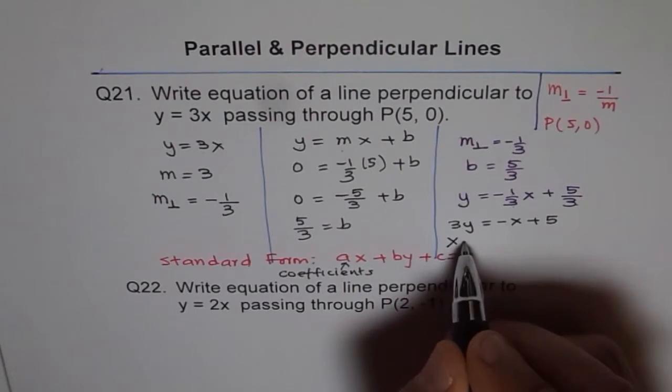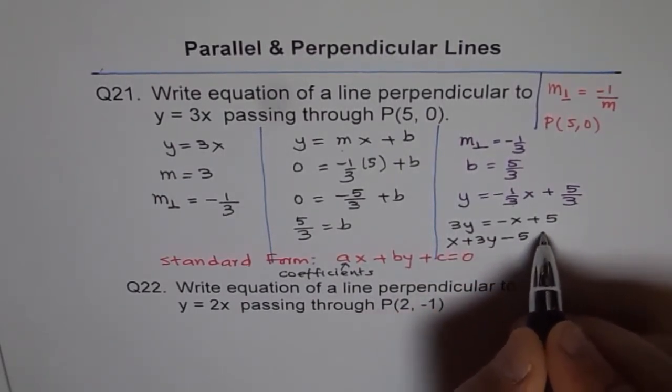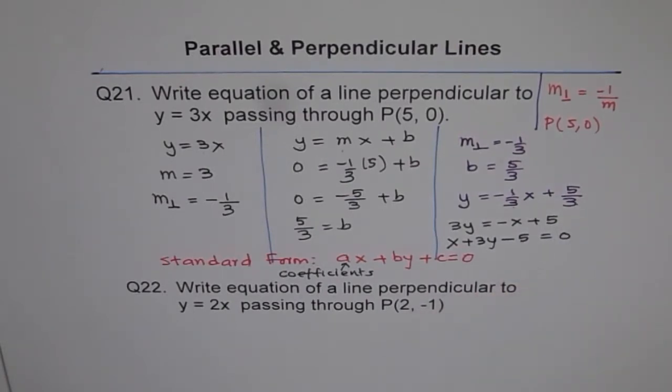So when we bring this side, x becomes positive. So we get x. And then we already have 3y here. 5 becomes negative. And then equal to 0. Do you see that? So that is the answer in standard form.